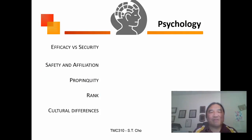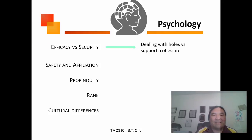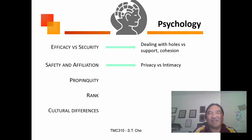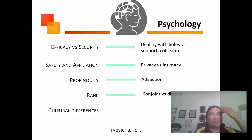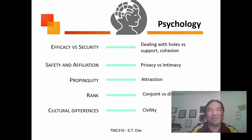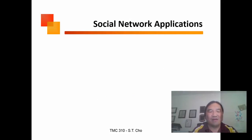In terms of psychological dimensions, what you're interested in is the contradiction between how effective the network is versus how secure you feel. That's where you're dealing with holes and confusion. Safety and affiliation relate to privacy versus intimacy. Propinquity means how attractive I am to it — in my mind I rank things by importance. In terms of cultural differences, how civil is it? This is all tied into the perception of the network.